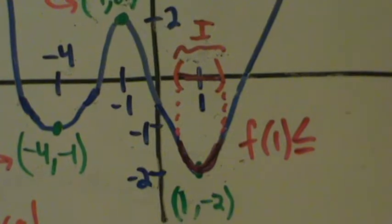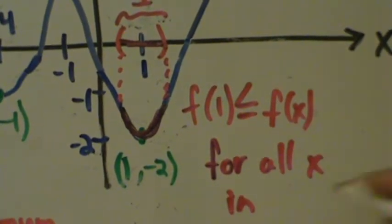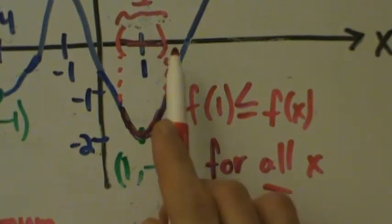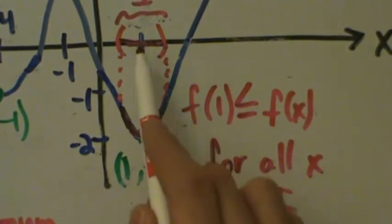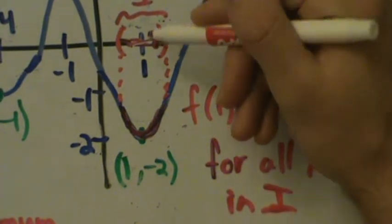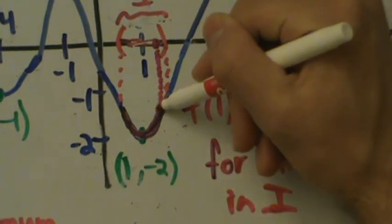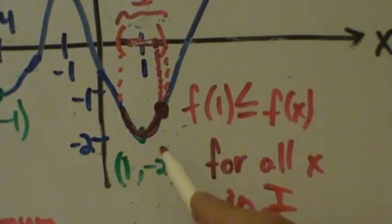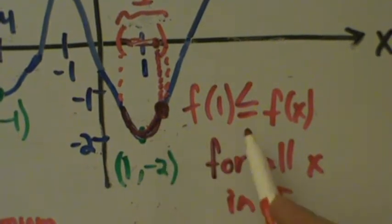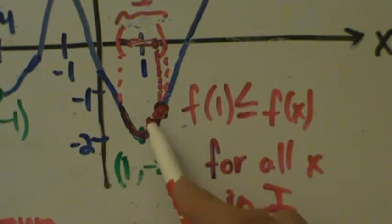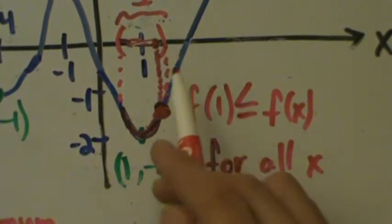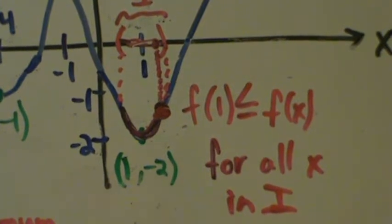Any x value that you take in this interval, f of 1 — which is negative 2 — is always going to be less than or equal to f of x for any x value that you pick. For example, we could pick this x value right here — it drops down to a y value, and negative 2 is less than or equal to that y value. So f of 1 is less than or equal to f of that x value. By the formal definition, this is a local min because we found an interval i that satisfies the definition.